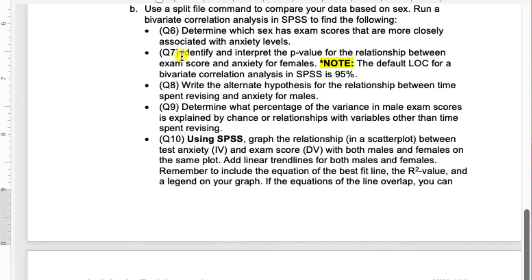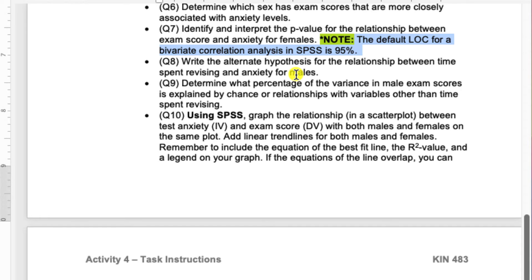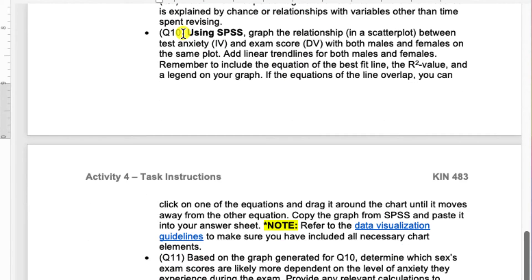I do want to point out for question 7, when you're interpreting the p-values in your output, remember that the default level of confidence for SPSS is 95%. So that should help you figure out how to interpret your p-value. For question number 10, you're going to generate a graph using SPSS that shows the relationship between test anxiety and exam scores with both males and females on the same plot. So you should only have one graph total.